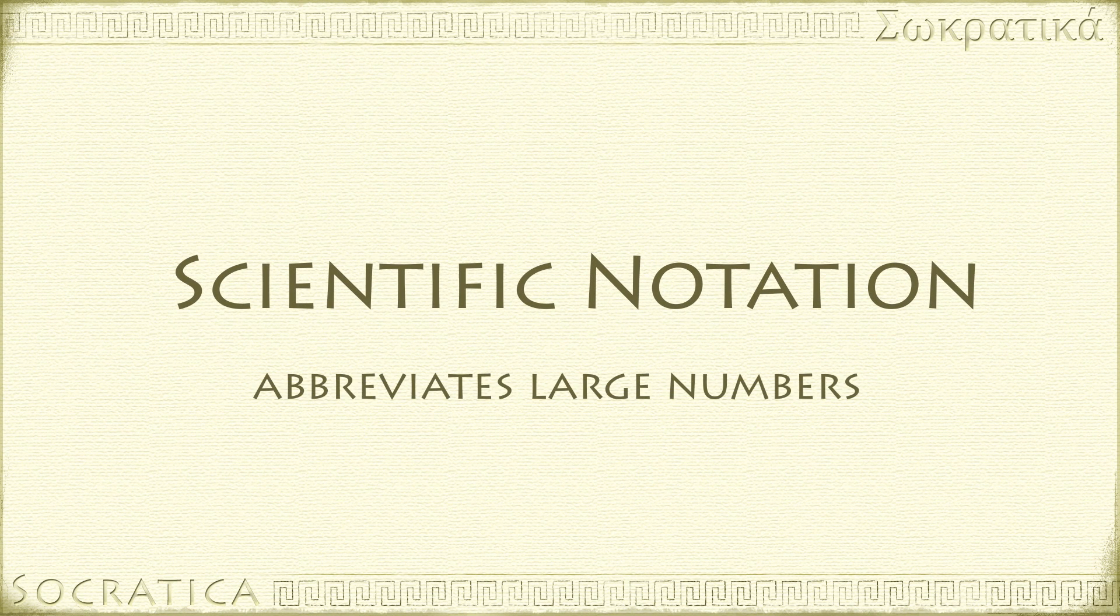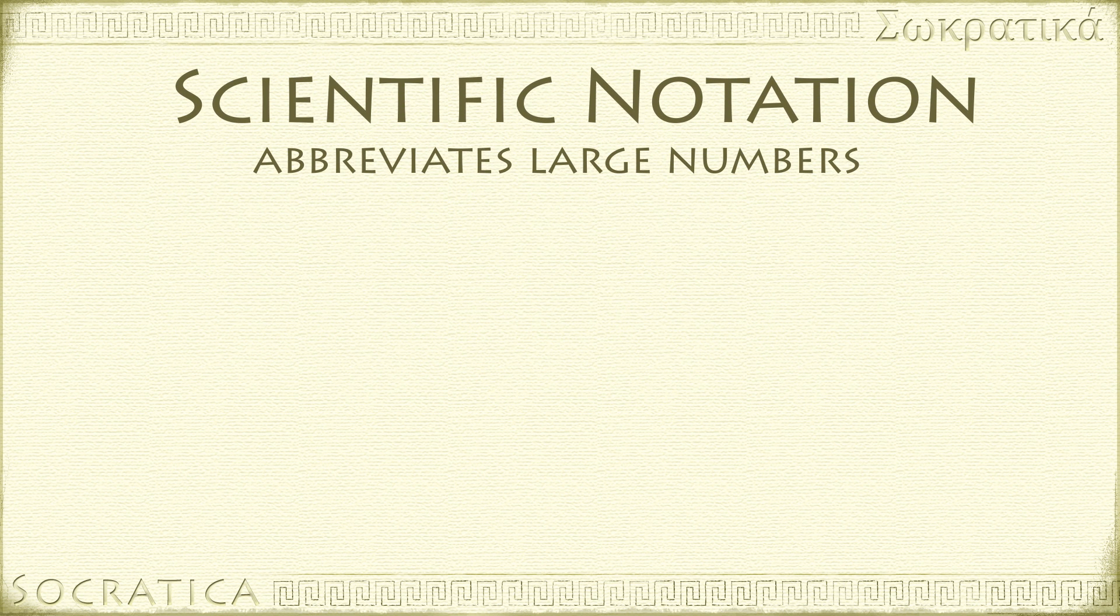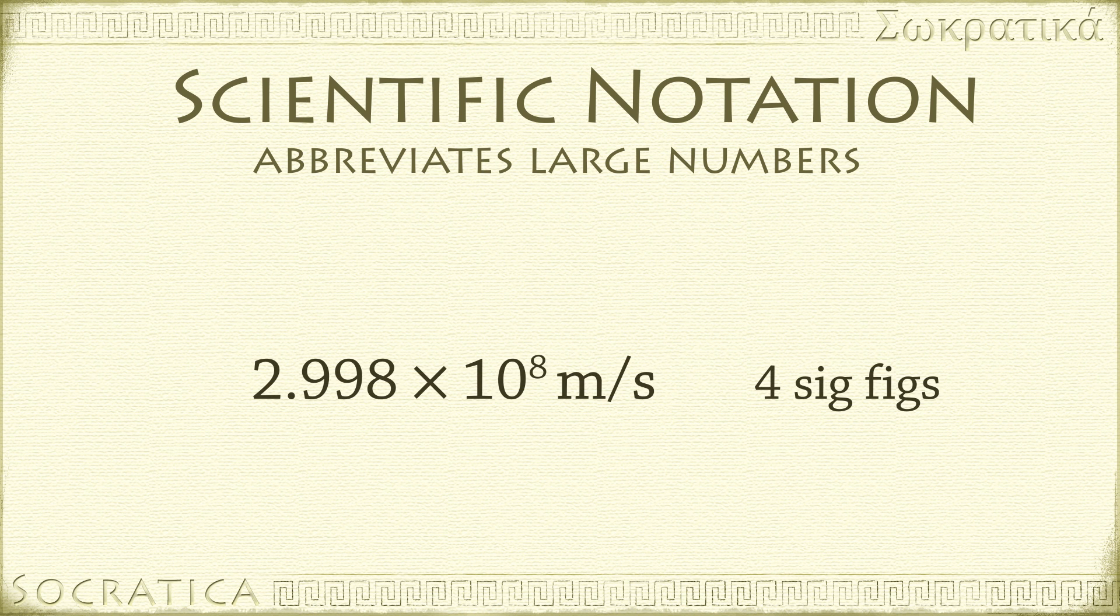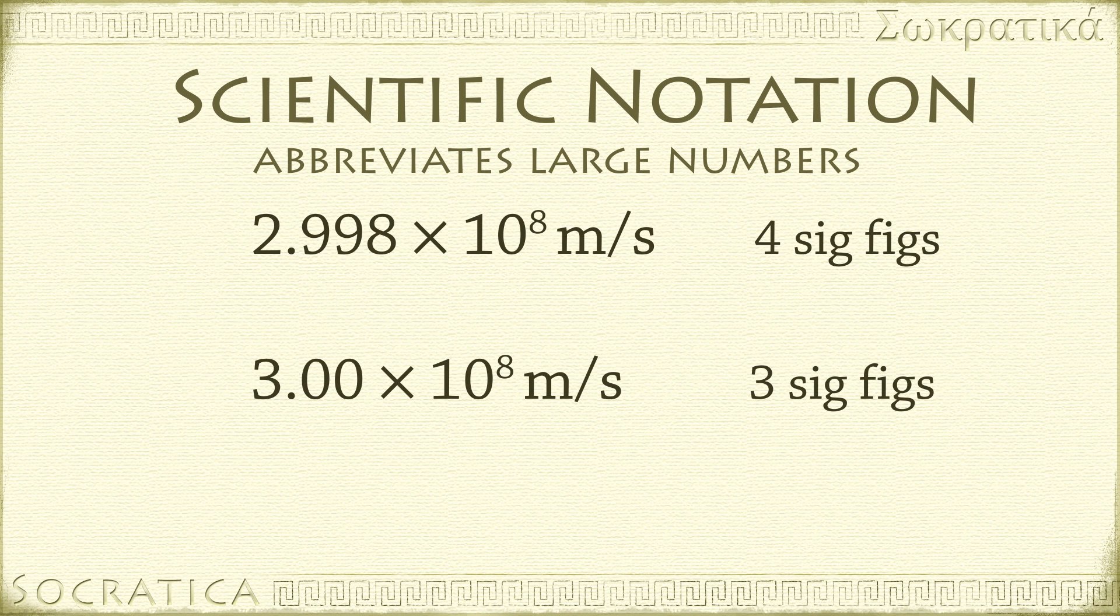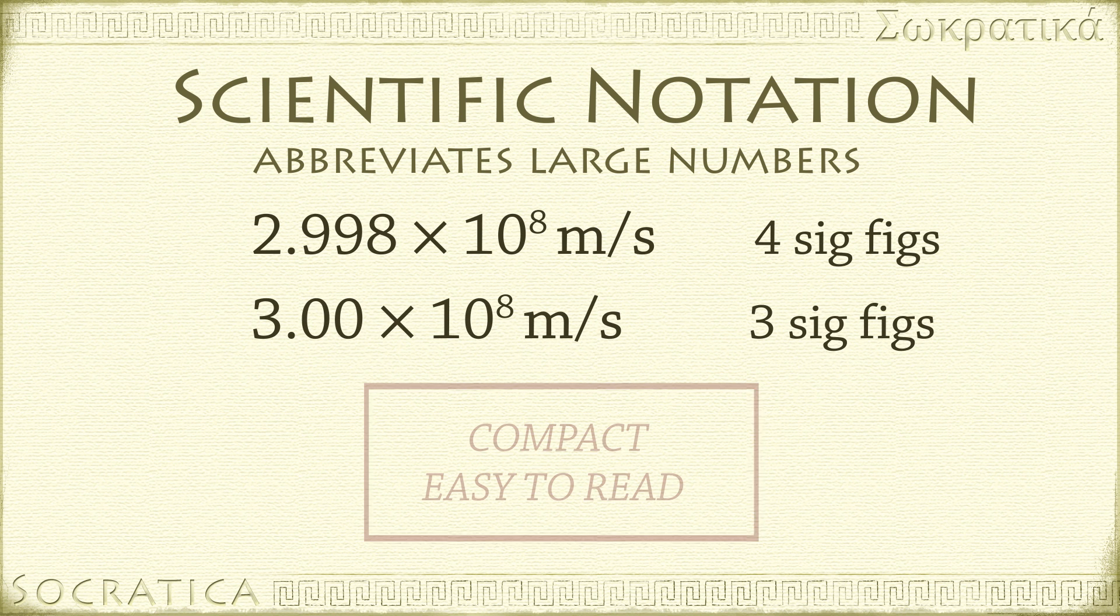Scientific notation is a much quicker way to write very large numbers. In scientific notation, the speed of light written to 4 sig figs is 2.998 times 10 to the 8th meters per second. If I need to write it with 3 sig figs, it's 3.00 times 10 to the 8 meters per second. This notation is much more compact and easier to read.